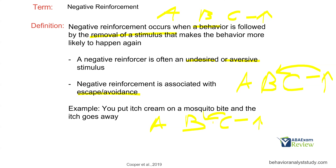You have to be very precise about what is your behavior and what is your consequence. Putting the itch cream on is the behavior, not the consequence. The consequence isn't the addition of the itch cream — the consequence is the removal of the itch. So when you're looking at negative reinforcement, be very precise about what's my behavior and what's my consequence.